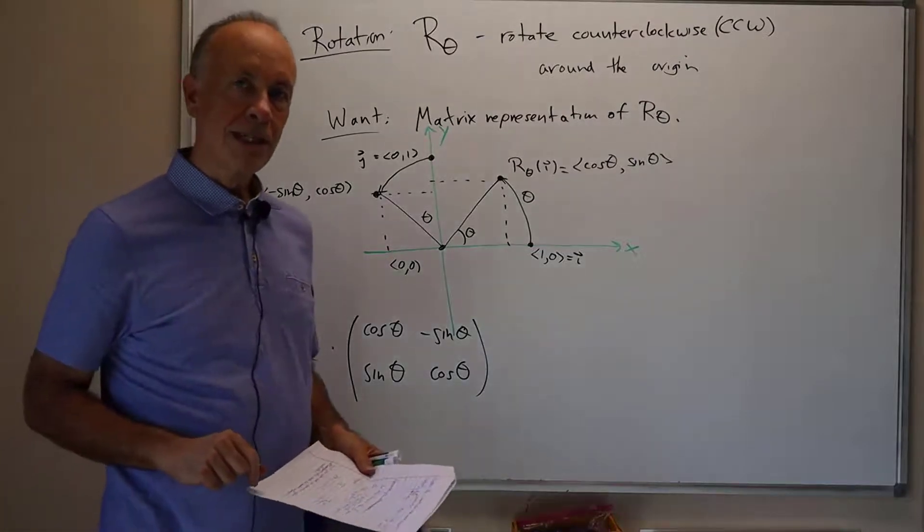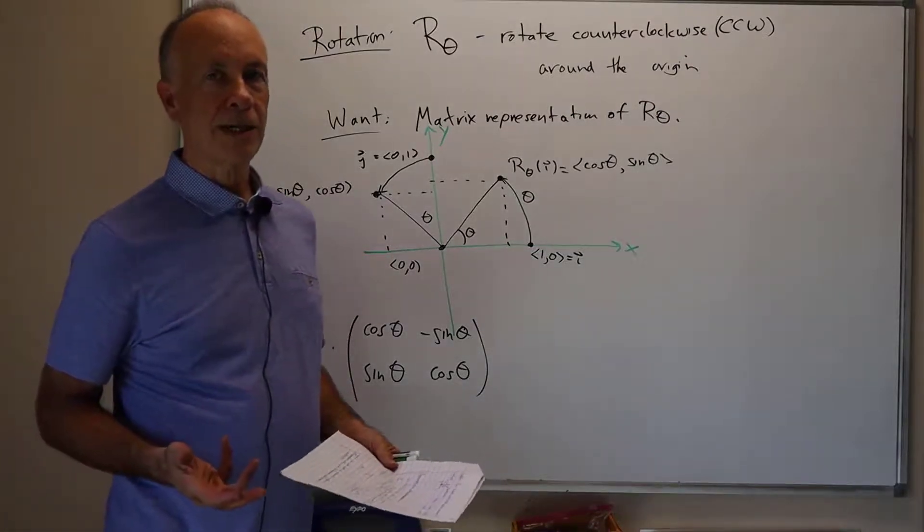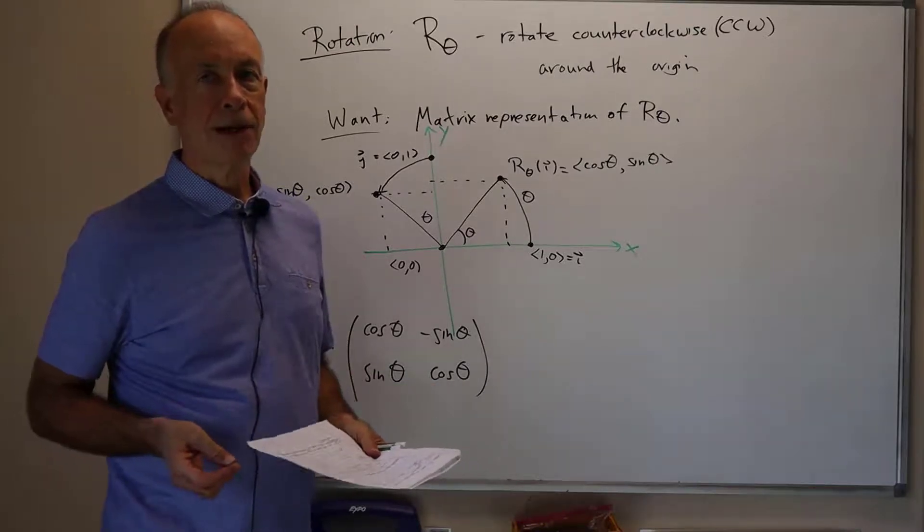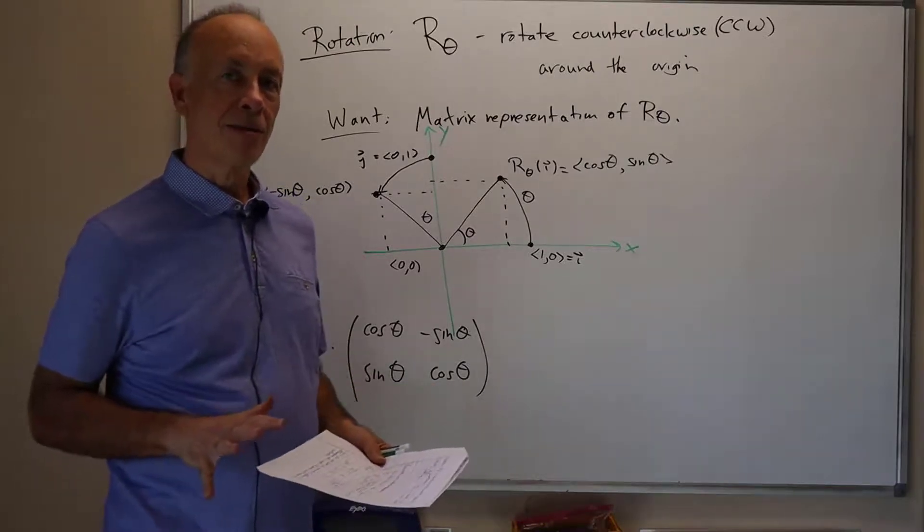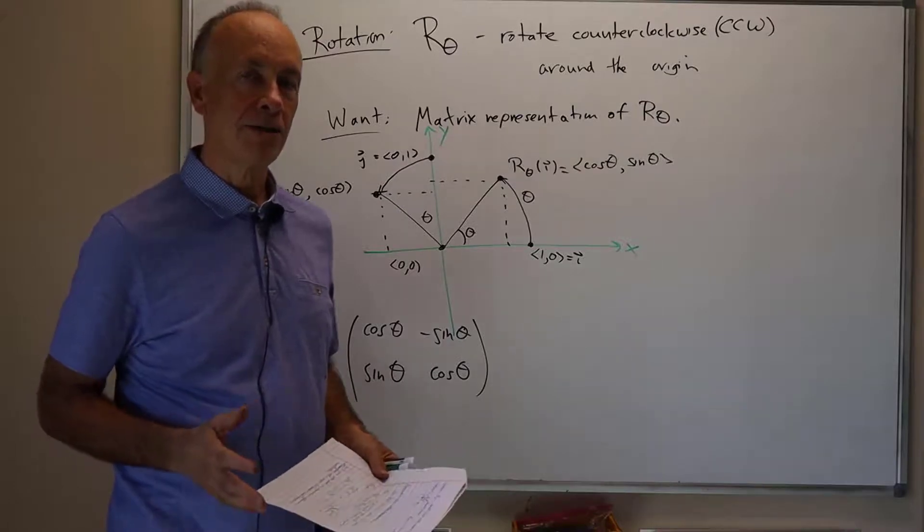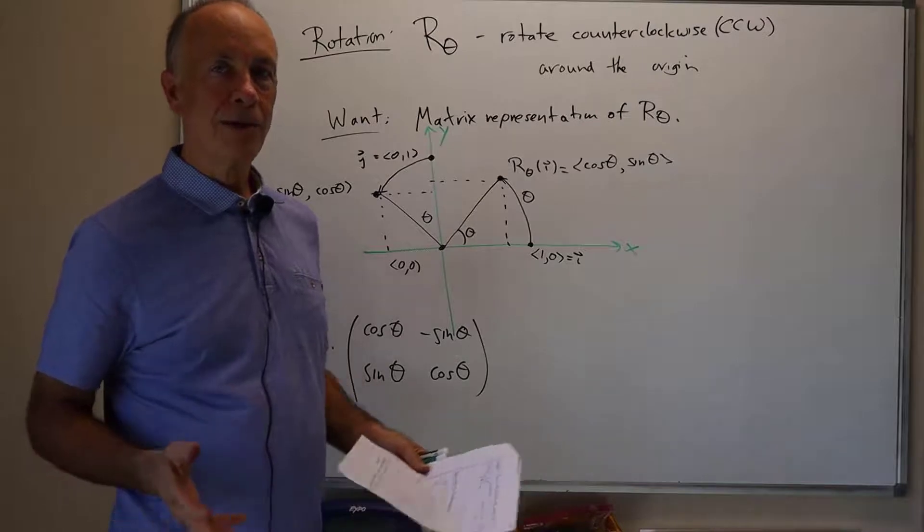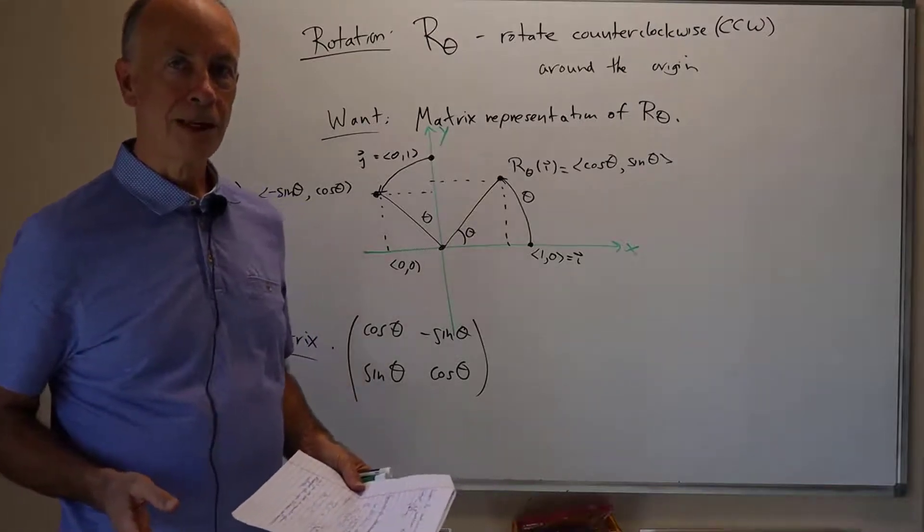Let's talk about what this means for representing affine transformations. Affine transformations, for the moment, we're not going to represent them by a single matrix. Later on, we'll see how to represent them by a single 3 by 3 matrix when we're working in R2. But for the moment, let's talk about what happens with the representations that we have so far.